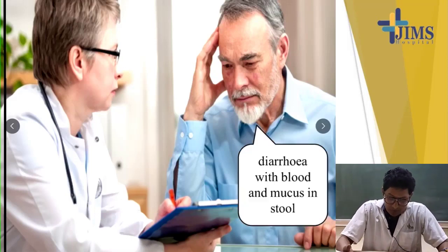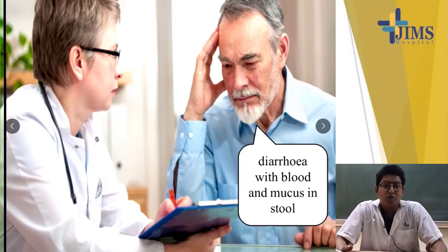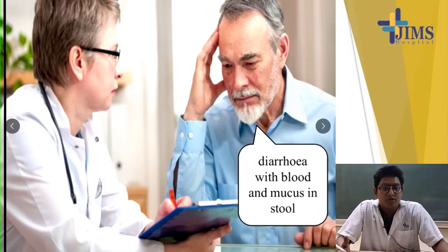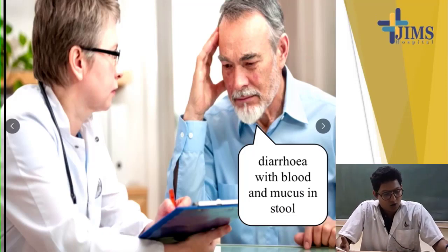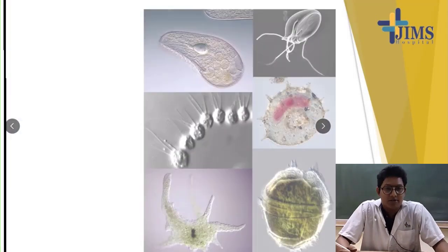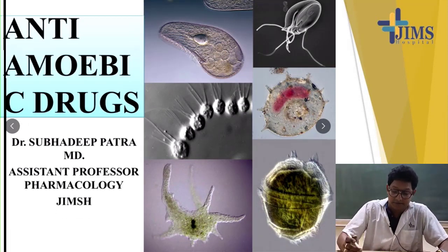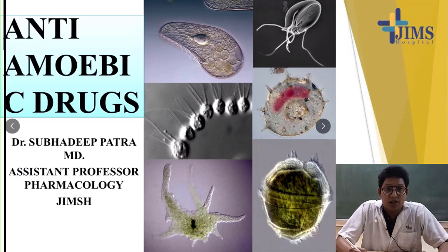Good morning students. A very commonly encountered problem in the OPT: a patient comes to you with complaints of diarrhea with blood and mucus in stool. Stool examination reports reveal the presence of cysts and trophozoites of Entamoeba histolytica. What will you do? The answer is you will prescribe anti-amoebic drugs. So let's see what these drugs are.